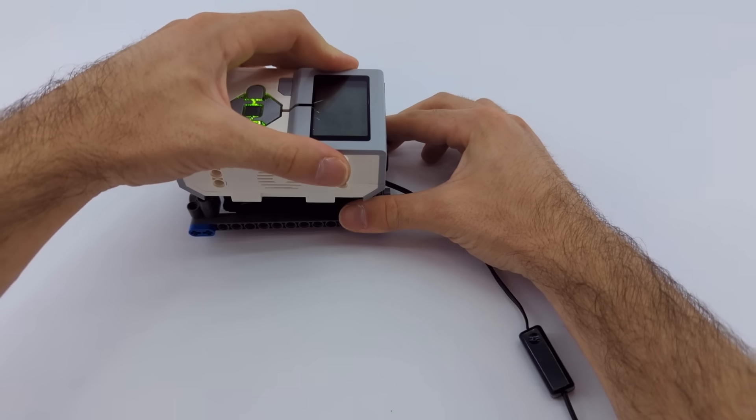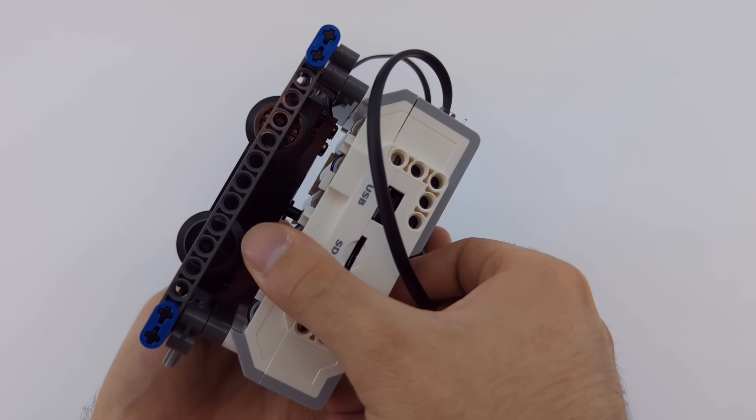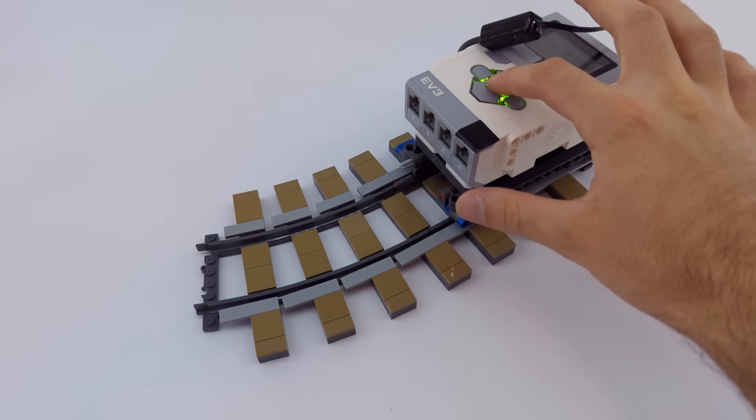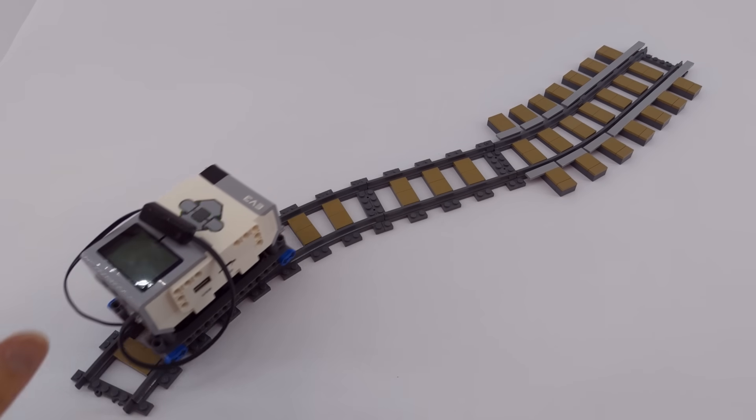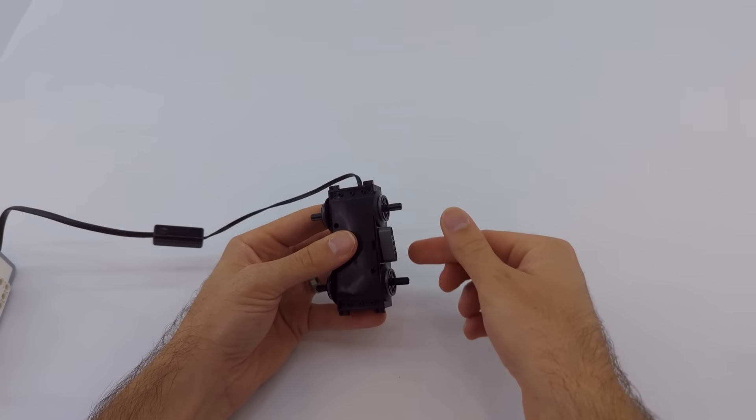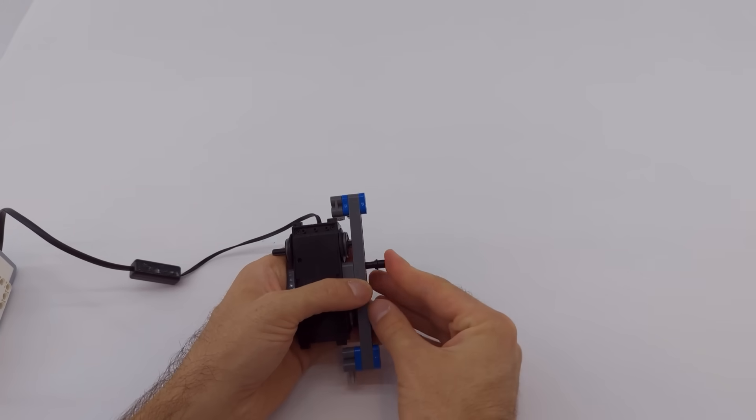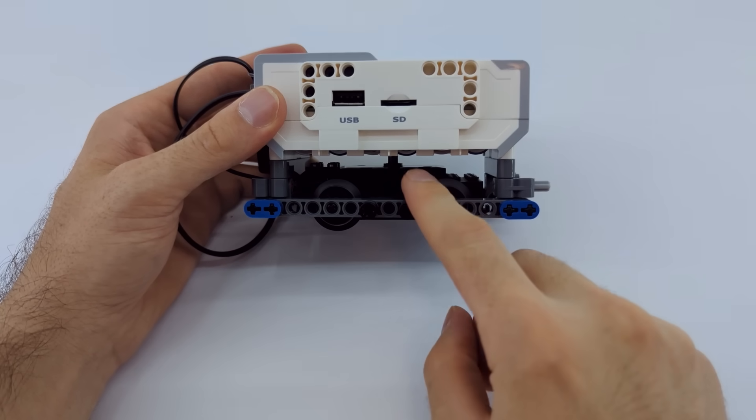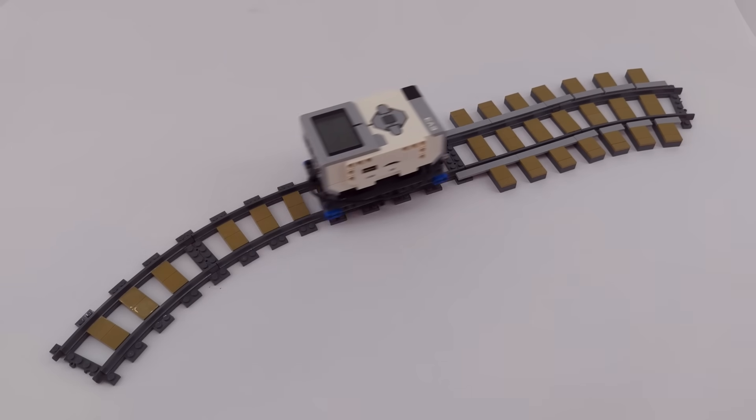I'll connect the wire and give it a test. Whoa, too fast. And now slowly on the rails. Super smooth. How about a longer set of rails? Perfect. I do want to keep the motor centered, so I'll add these. I also removed the battery cover because this little part hits it. Looks like those changes cause no harm.